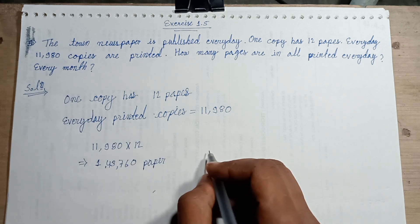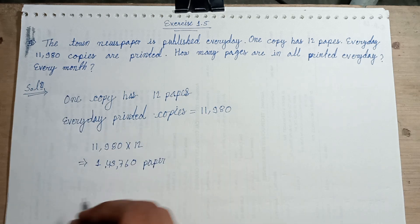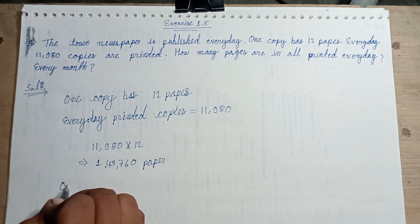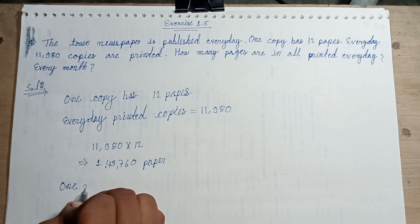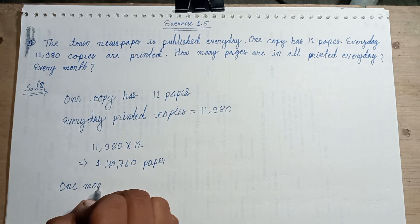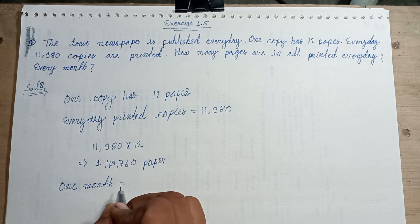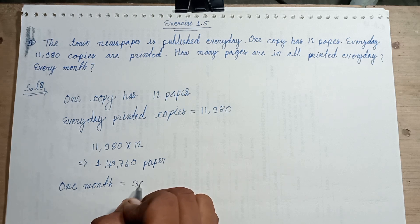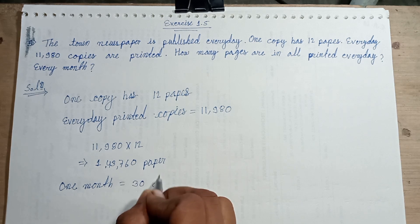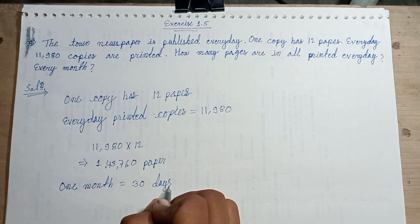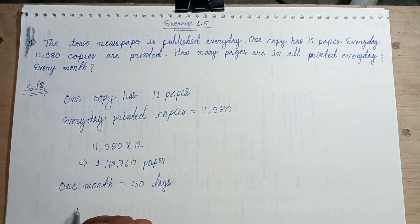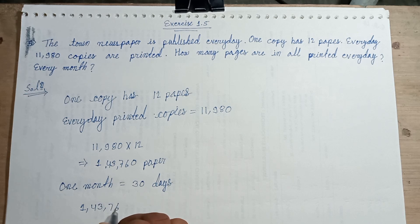143,760 pages per day. How many days in one month? One month is equal to 30 days normally. So 143,760 multiplied with 30.